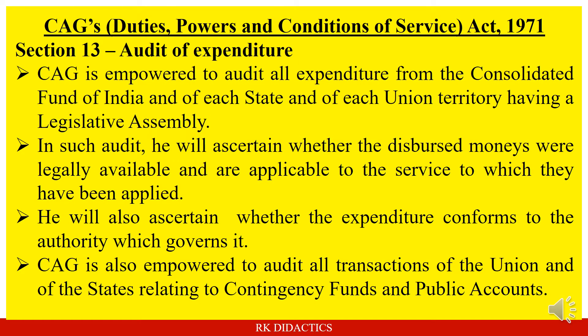Section 13 deals with audit of expenditure. CAG is empowered to audit all expenditure from the Consolidated Fund of India and of each state and of each union territory having a legislative assembly. In such audit, he will ascertain whether the disbursed money was legally available and applicable to the service to which it has been applied. He will also ascertain whether the expenditure conforms to the authority which governs it.